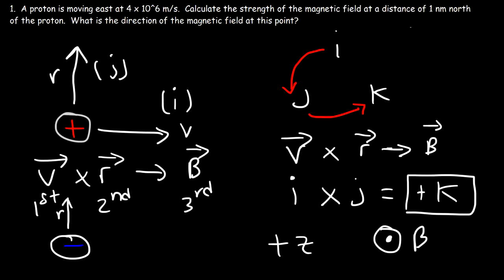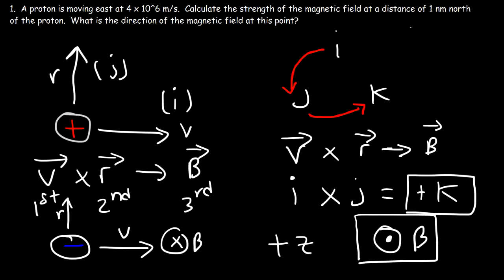This answer is in agreement with what we had — the magnetic field is coming out of the page, which means it's in the positive z direction. Now what if we had an electron instead of a proton, with the same position vector and velocity vector? The direction of the magnetic field for an electron is simply opposite to that of a proton. For a proton it's going out of the page in the positive z direction, so for an electron it's going into the page — the negative z direction.